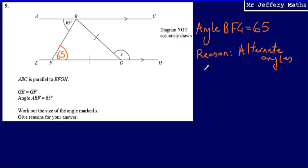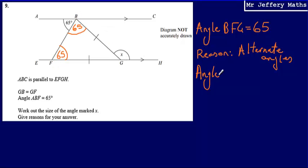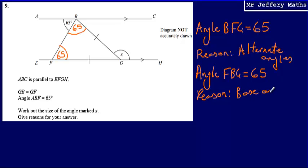The next angle to figure out: I should recognize that I've got a triangle here, and I've got two lengths which are the same in that triangle, which means it's isosceles. Because it's isosceles, the base angles are equal — so that angle is the same as that angle. Angle FBG is equal to 65. The reason is that base angles on an isosceles triangle are equal.